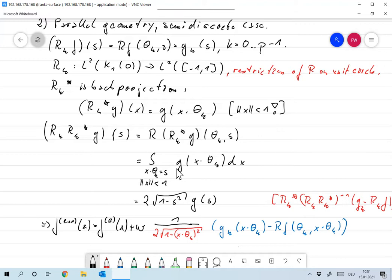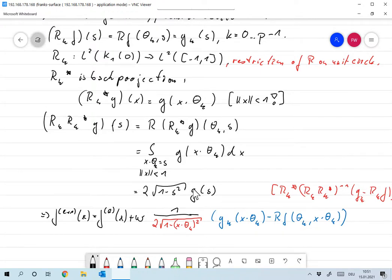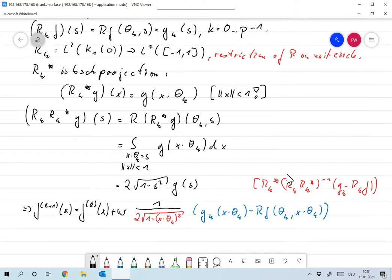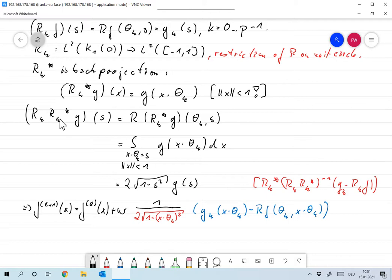And since everything is restricted to the unit circle, this integration needs only to be done on the unit circle, whenever norm x is smaller than one. Now, this is constant. So it's just G of S. And the length of the line, that's a line segment through the unit circle with distance S from the origin. So its length is twice times the square root of one minus S squared. So Rk Rk adjoined G is just the same as G, multiplied with two times the square root of one minus S squared. Now, in the definition of the Kaczmarz algorithm, we have this with minus one. So Rk Rk adjoined to the minus one G is nothing but multiplication of G with one over two square root one minus S squared.